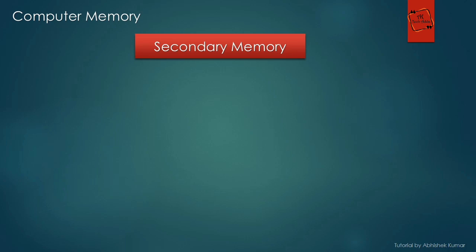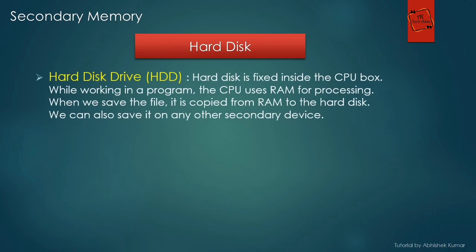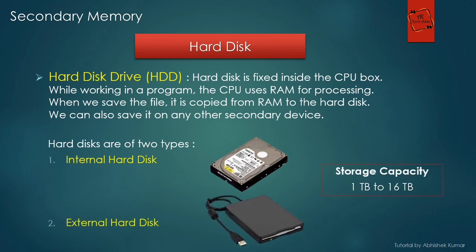Now we'll talk about all the secondary devices. A secondary device stores information permanently, so when you save your data using the save option, it gets saved in a secondary device. Our first device is a hard disk drive — in short, we simply call it a hard disk or HDD. This hard disk is fixed inside the CPU box. While working in a program, the CPU uses RAM for processing, and when we save the file, it is copied from RAM to the hard disk.